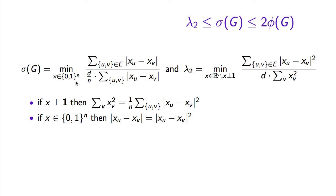Another observation is that when we have Boolean vectors, those differences xᵤ minus xᵥ are themselves Boolean. So if we square them, we don't change their value, because zero squared is zero and one squared is one. Finally, an expression like summation over (u,v) of (xᵤ minus xᵥ) is invariant to adding some fixed constant to every coordinate of a vector.